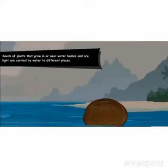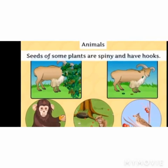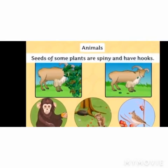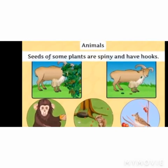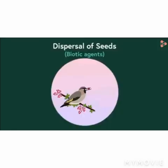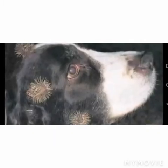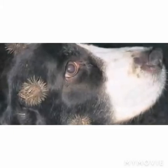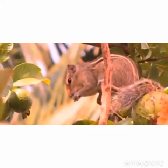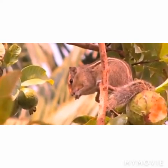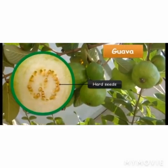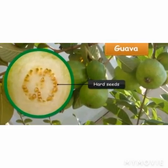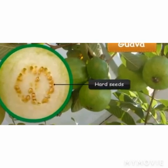Next is dispersal of seeds by animals. Seeds of some plants are spiny — they have thorns and hooks which get attached to the body of animals and are carried away. Animals like squirrels, monkeys, birds, and human beings eat fruits and their seeds are scattered, which later grow into new plants. Examples include mango, guava, apple, etc.